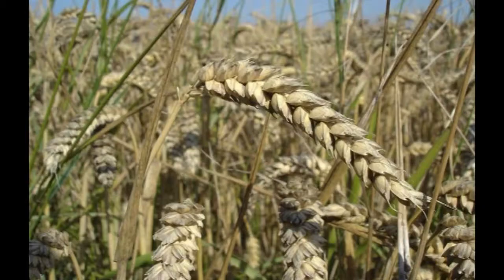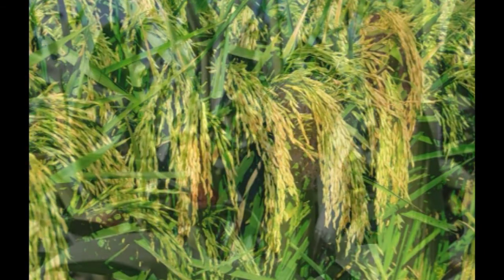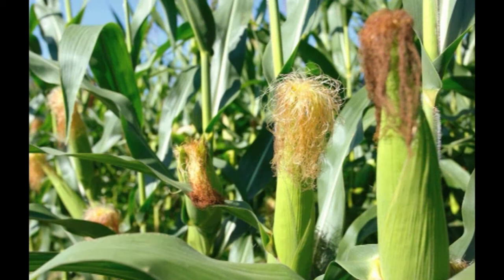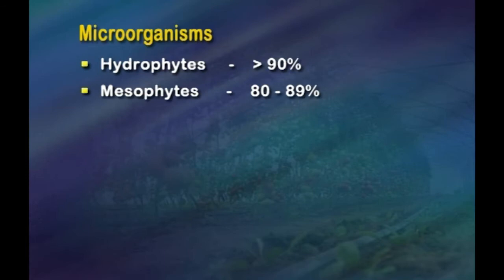The rate at which grain will lose or gain moisture generally depends upon its condition, type of grain, and extent to which it is exposed. For example, wheat has 8 to 10 percent, paddy has 20 to 24 percent, and maize and sorghum have 20 percent moisture content. Microorganisms are classified as hydrophytes (greater than 90 percent), mesophytes (80 to 89 percent), and xerophytes (less than 80 percent).